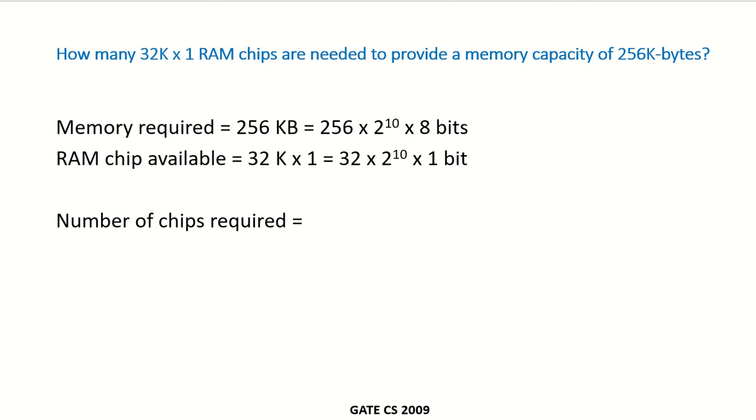This question asks how many 32K by 1 RAM chips are needed to provide a memory capacity of 256 kilobytes. The memory that is required is 256 kilobytes, that is 256, and K is 2 to the power of 10, and byte is 8 bits. And the RAM chip that is available is 32K by 1.